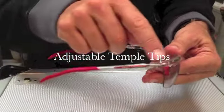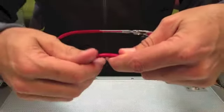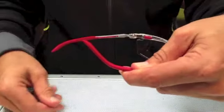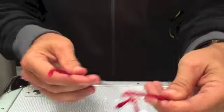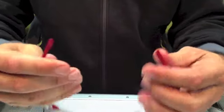Magster has incredibly thin arms. These are just perfect for adjustment. The temple tips can move down, up, in, and out. With adjustable temple tips, you can create the perfect fit.